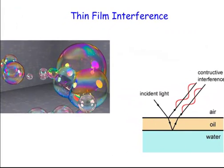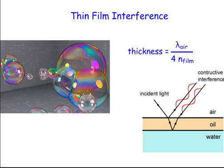The last topic is thin film interference — that's when we see blues, purples, and greens in bubbles, and we can find the thickness of a bubble. This equation is not on your equation sheet; you must memorize it: the thickness equals the wavelength in air divided by four times the index of refraction of the film. That is all of Waves and Optics from beginning to end — good luck on the test!